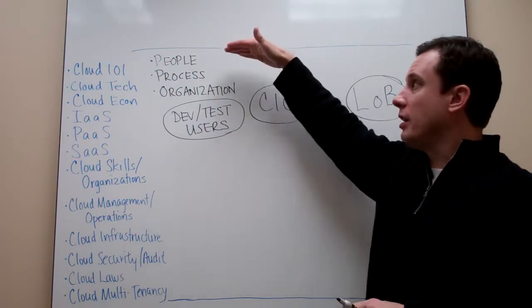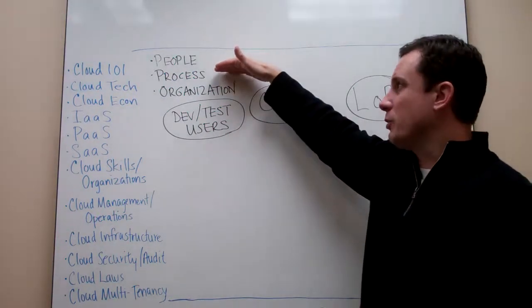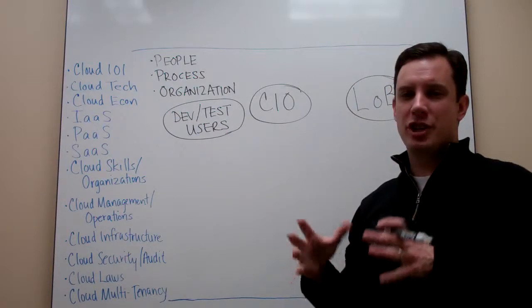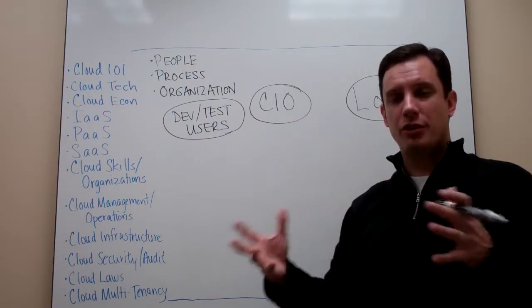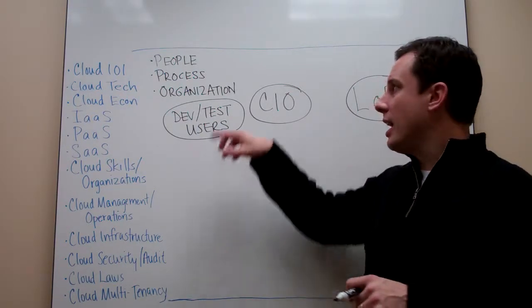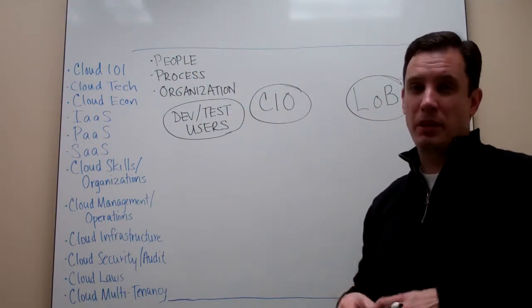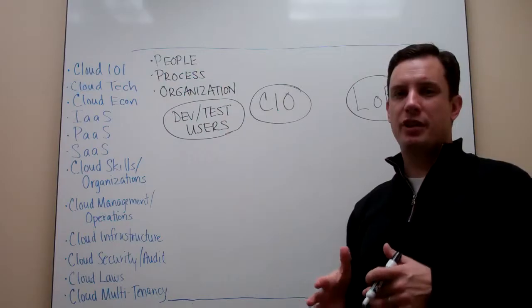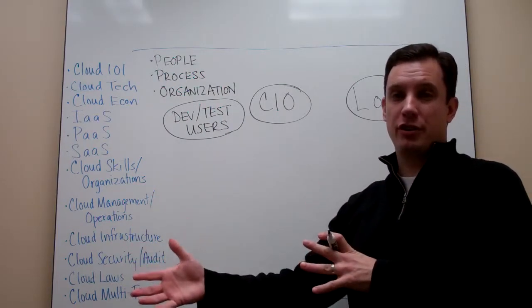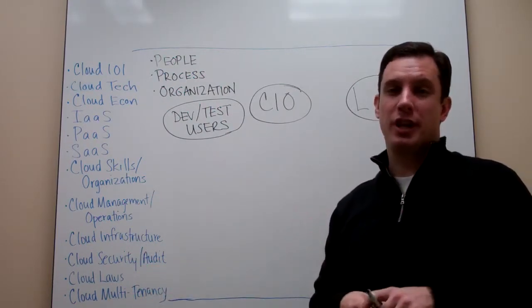The first video looked at how people are changing and their skills. The second one looked at how process is changing and how that affects architecture under the covers for cloud computing. And the third thing we're going to look at is how the organization may have to change in order to really take advantage of cloud computing, both for internal IT resources and external IT resources.